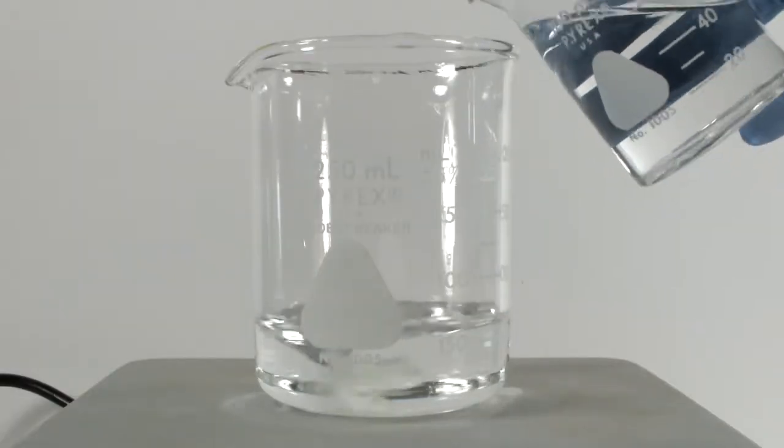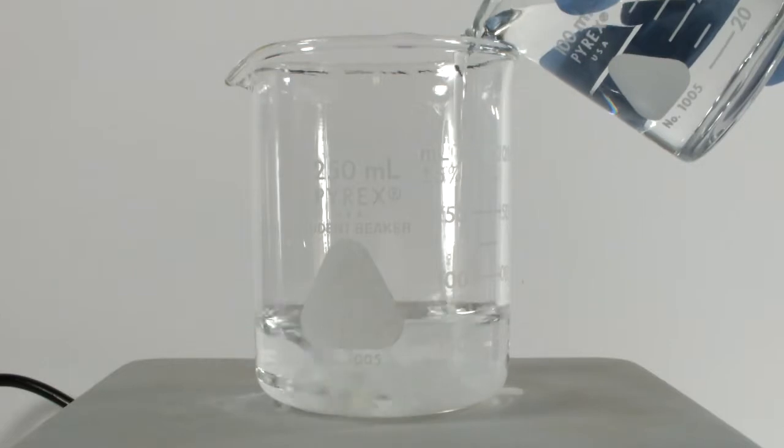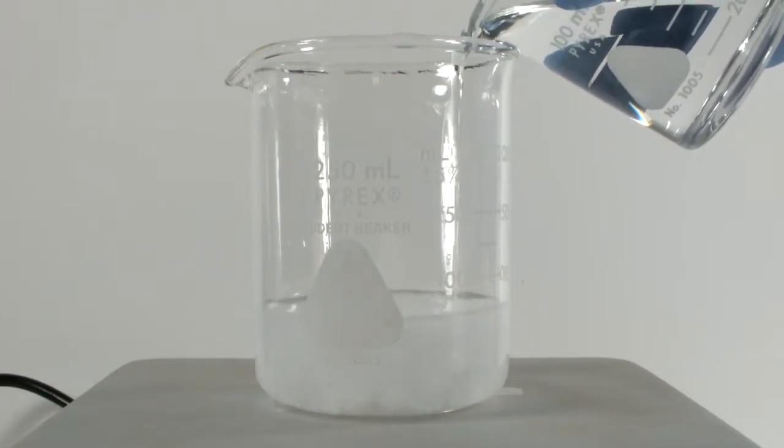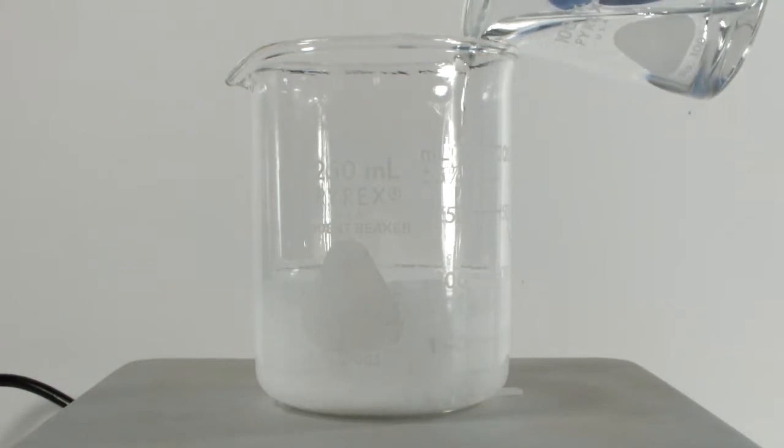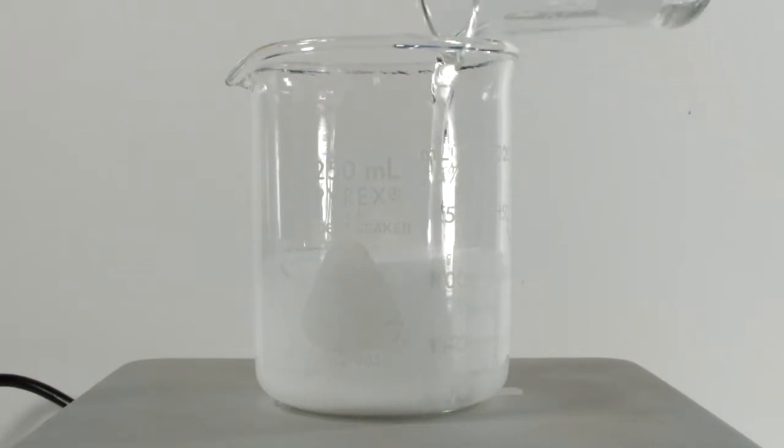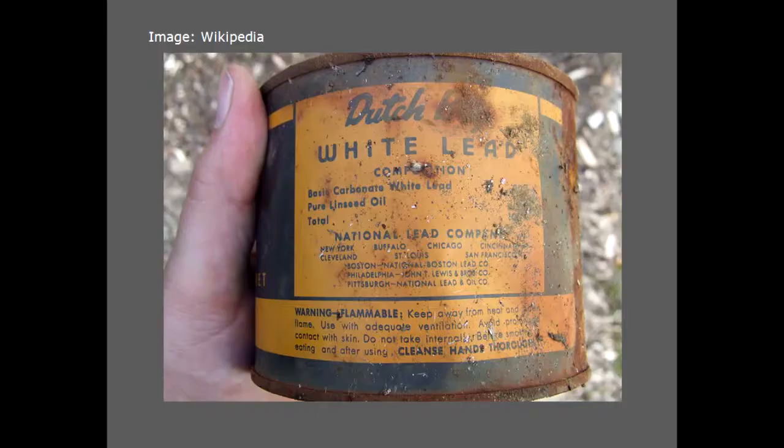Next up is the lead compound that gave lead paint its name. Here's another 50 milliliters of the 0.5 molar lead nitrate to start, and I'm adding the proper equivalent of a sodium carbonate solution. This will produce basic lead carbonate, also known as white lead. Here's a picture from back in the day when lead in your paint was a selling feature. Oh, how the times have changed.